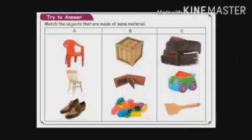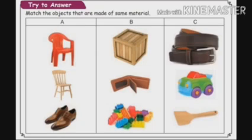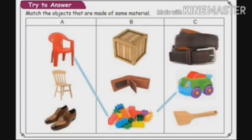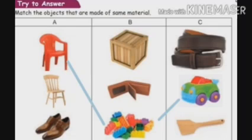Turn to the next page. Children, look at the picture. We need to match objects made of the same material. First — plastic chair. See the box. Building blocks are multi-colored pieces. These are all made up of plastic. Next one — toy car. Remaining two are for your homework. Match the objects and take a photo and send to me.